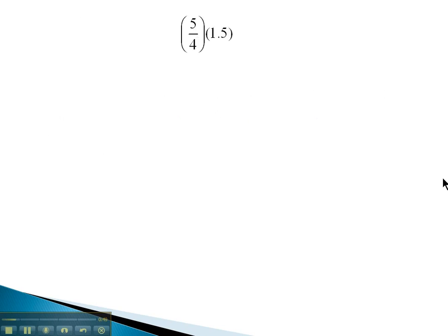For example, if we were multiplying 5 fourths times 1.5, we're going to change that decimal into a fraction by putting it over 1. We now would have 5 fourths times 1.5 over 1.